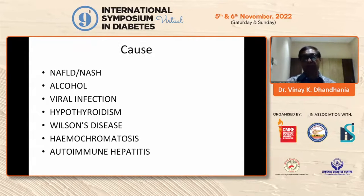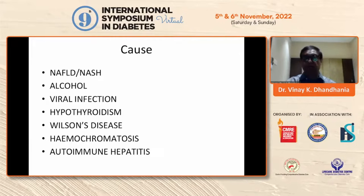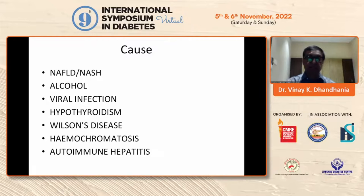Important causes of CLD include NAFLD, alcohol, viral infection especially hepatitis C and hepatitis B virus, hypothyroidism, Wilson's disease, hemochromatosis, and autoimmune hepatitis. Whenever you have abnormal liver enzymes, before labeling them as NASH due to diabetes, we should rule out other causes: history of alcohol, viral infection by hepatitis B and C markers, hypothyroidism by TSH, Wilson's disease, hemochromatosis, and autoimmune hepatitis — all can be ruled out before labeling as NASH.